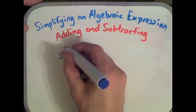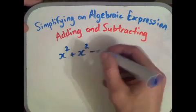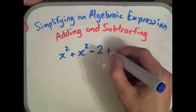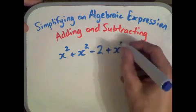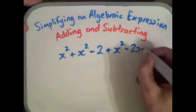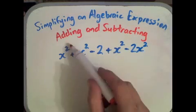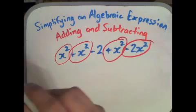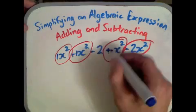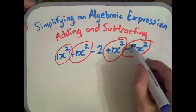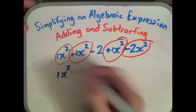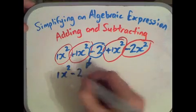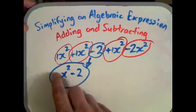Let's look at another example: x squared plus x squared minus 2 plus x squared, then subtract 2x squared. Remember we can only add things that are the same. So x squared with x squared with x squared gives us 3x squareds. We subtract away 2, giving us 1x squared. And this minus 2 we can't subtract away, so we put it on the end as minus 2.